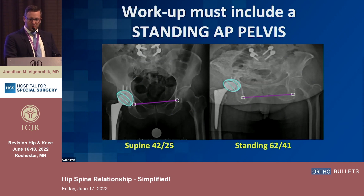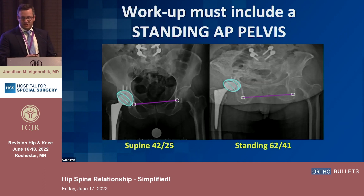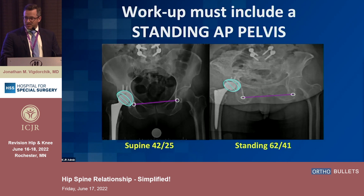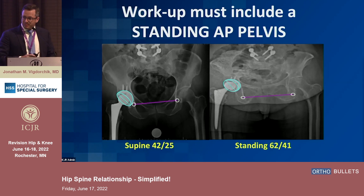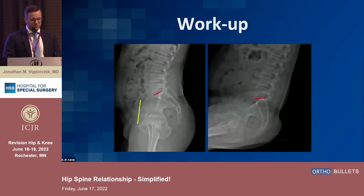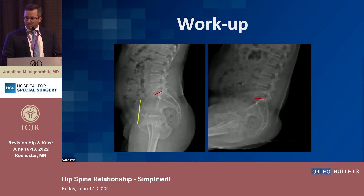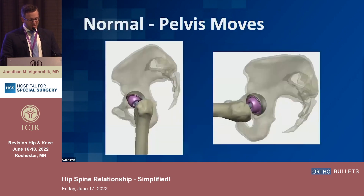For workup, we've instituted a complete departmental policy: every hip that has dislocated goes through this protocol. You get standing and supine x-rays, lateral x-rays, and a CT scan. If you just get a supine AP pelvis, you have no idea why the hip is dislocating. The standing lateral and sitting lateral are very simple x-rays to obtain, with very simple lines to draw.